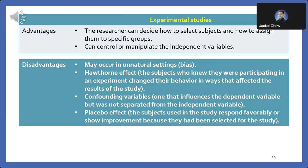Next, let's look into the advantages and disadvantages of experimental studies. Advantage 1: The researcher can decide how to select subjects and how to assign them to specific groups, allowing for precise control over variables. Advantage 2: Researchers can manipulate independent variables, facilitating the establishment of cause and effect relationships.